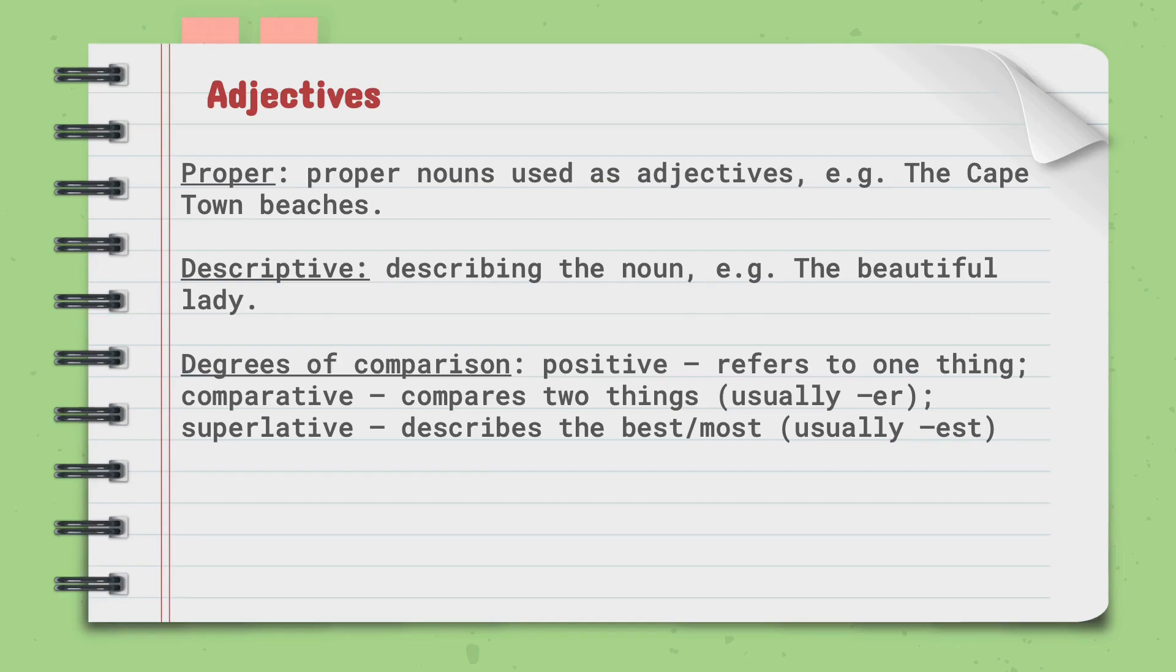It can also be used in degrees of comparison. Positive way is to refer to one thing. Comparative is to compare two things, usually ending in er. Superlative describes the best, or the most, usually ending in est.